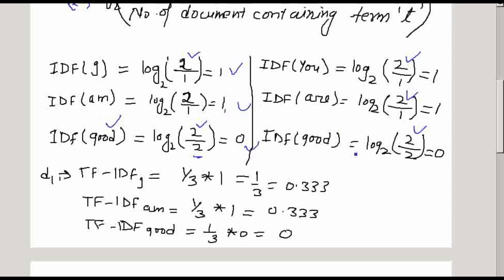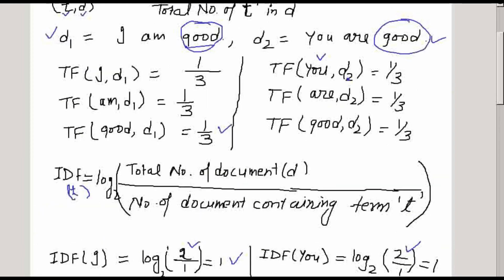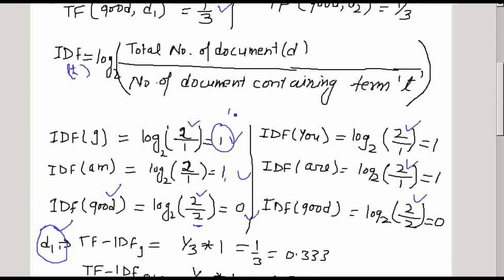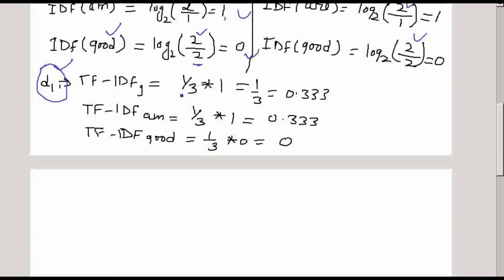Now we calculate the TF-IDF scores for document D1. The TF-IDF for 'I' in D1 is the term frequency multiplied by the inverse document frequency. The term frequency we calculated was 1/3, and the IDF is 1, so 1/3 multiplied by 1 equals 1/3, giving a TF-IDF score of 0.33.